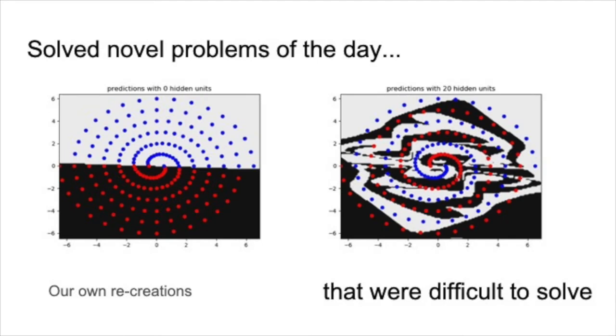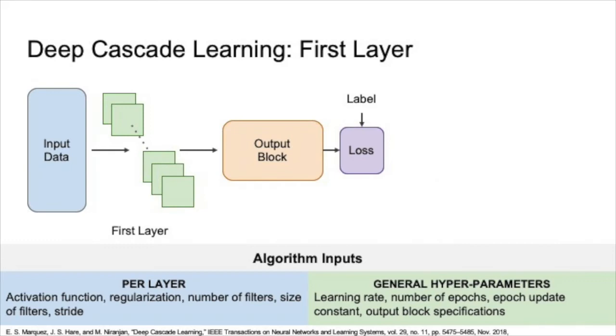It was also able to solve considerably difficult problems, such as the double spiral. Unfortunately, the original CASCOR did not address applications requiring convolution. One approach of applying CASCOR to CNNs was introduced in 2018. Deep Cascade Learning, or DCL, attempts to solve the problem of vanishing gradients in CNNs by keeping all trainable parameters close to the loss function.